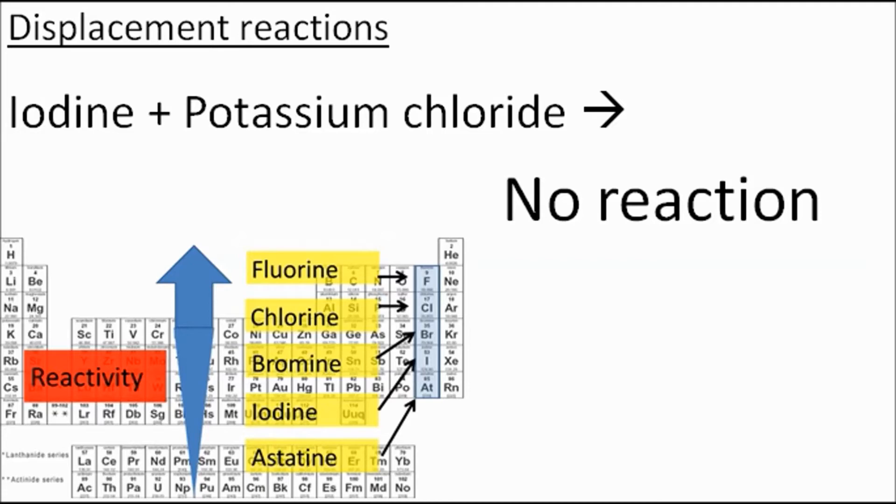That's called a displacement reaction. That's it, really. That was a very quick run-through of the group 7 halogens. Thanks for watching.